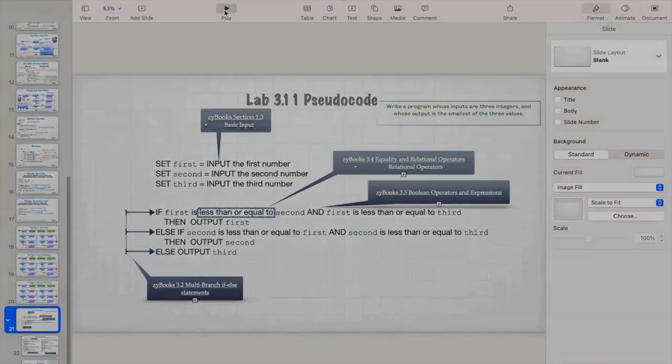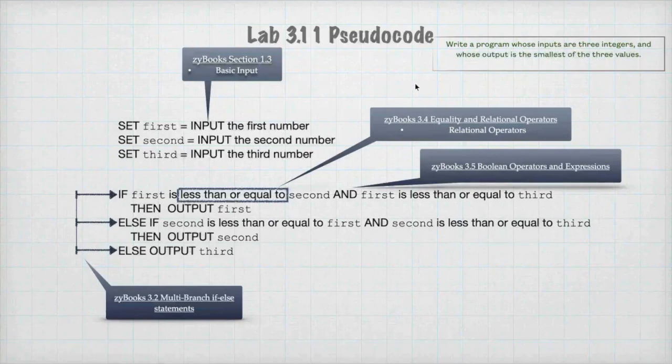So here, we have lab 3.11 and it's write a program whose inputs are three integers and whose output is the smallest of the three integers. So this is a prime use of the word and, of the Boolean operator and, and this is pseudocode. So you're going to have to turn in pseudocode and flowcharts and so it's time to start talking about pseudocode because a lot of people like it.